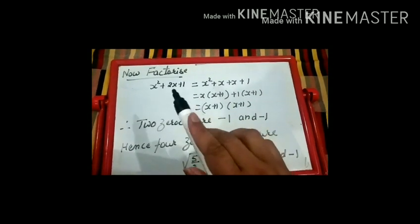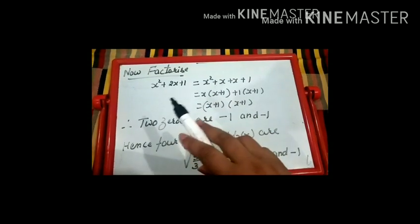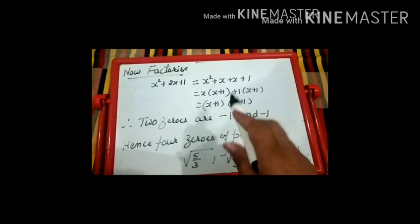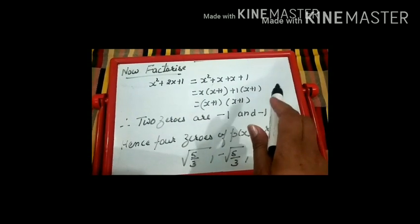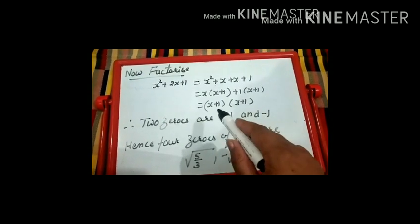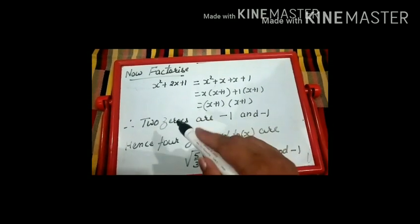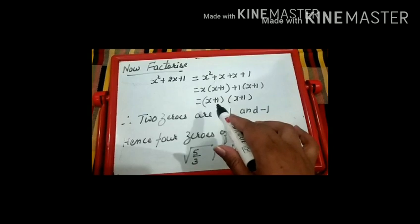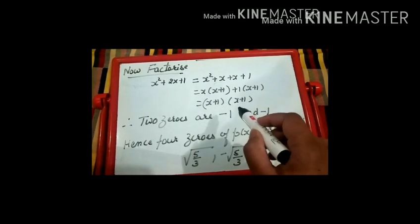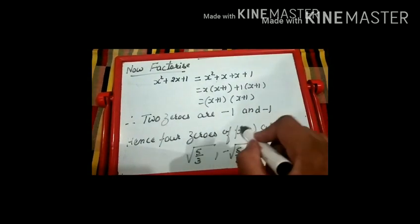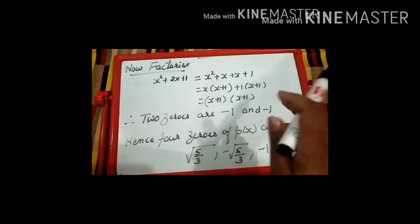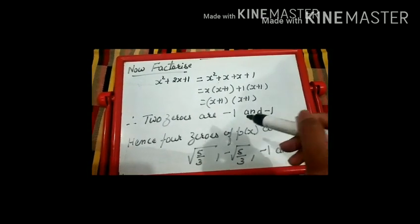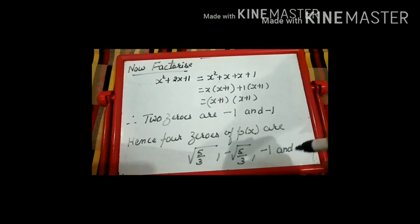Our quotient is x² + 2x + 1. We factorize it using middle term splitting: x² + x + x + 1. Taking x common from the first two: x(x + 1), and 1 common from the last two: 1(x + 1). So the two factors are (x + 1)(x + 1). Setting each equal to zero gives x = -1 and x = -1. Hence the four zeros of p(x) are √(5/3), -√(5/3), -1, and -1.